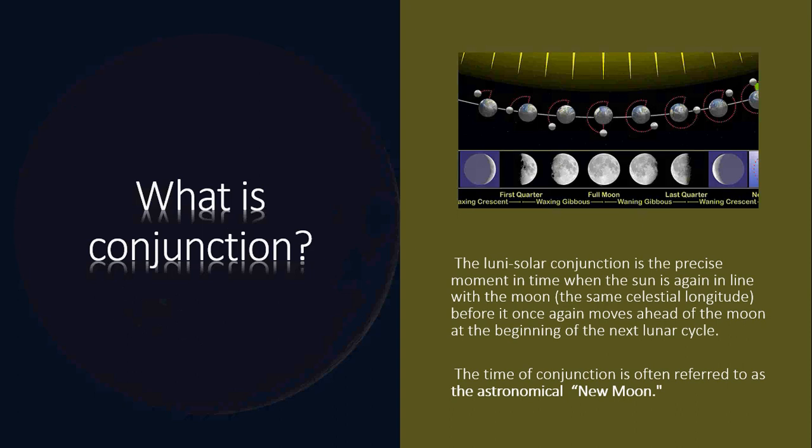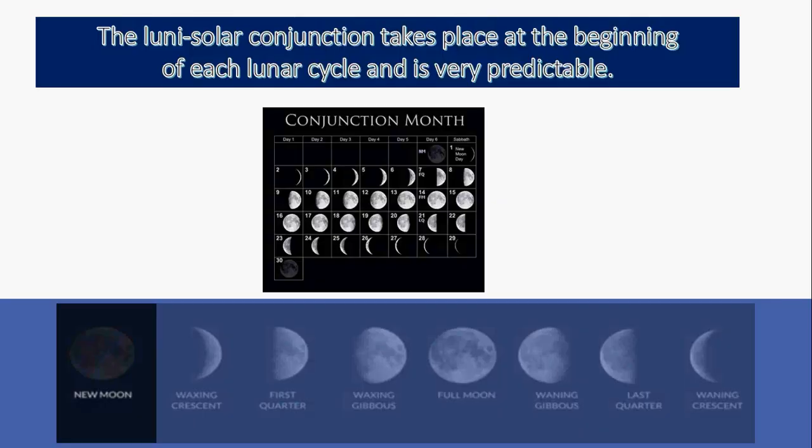What is conjunction? The lunar-solar conjunction is the precise moment in time when the sun is again in line with the moon at the same celestial longitude, before it once again moves ahead of the moon at the beginning of the next lunar phase. The time of conjunction is often referred to as Astronomical New Moon. The lunar-solar conjunction takes place at the beginning of each lunar cycle, and it's very predictable.